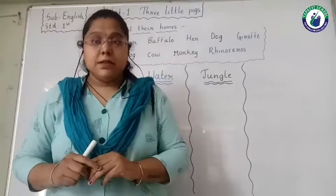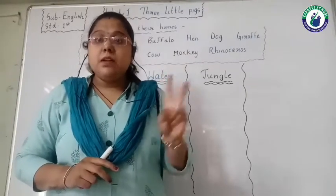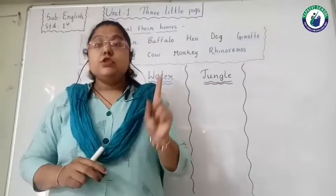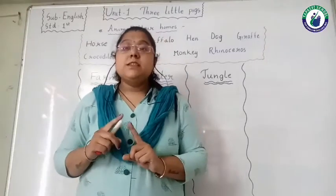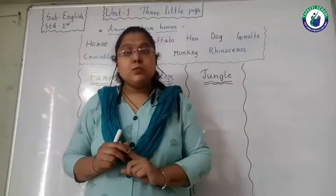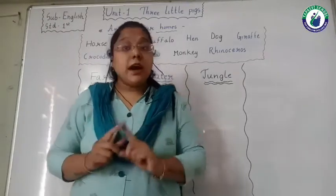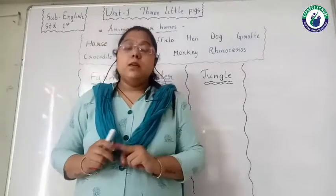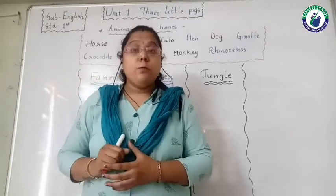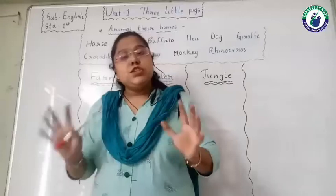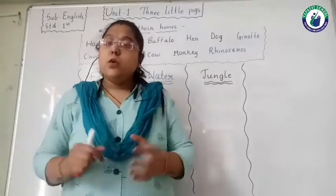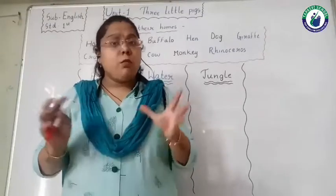There are three types of animals. First, domestic animals — these are the animals which we can see near our houses, they cannot harm us. Second, wild animals — wild animals are very dangerous and they are found in the jungle only, so the jungle is their home.